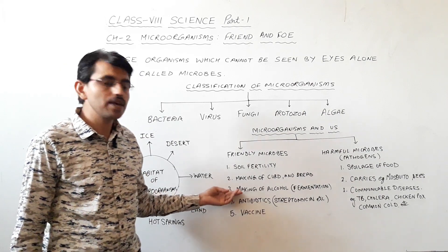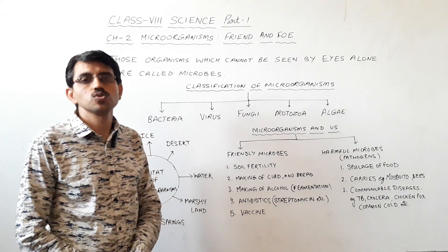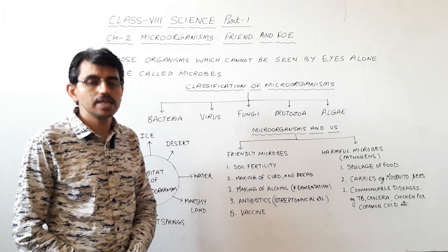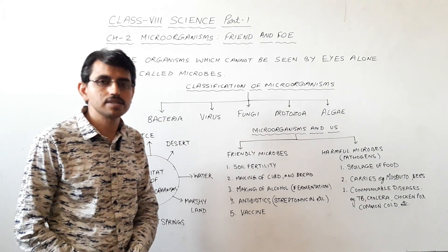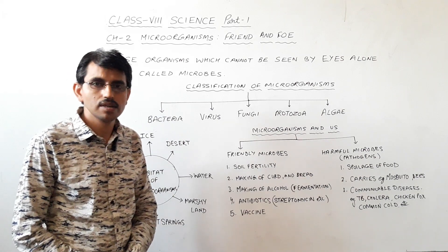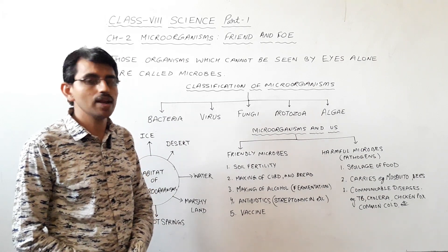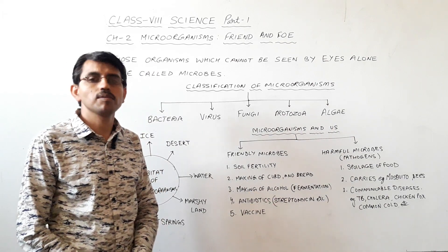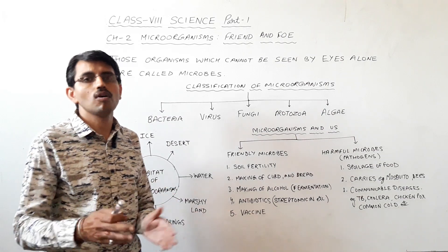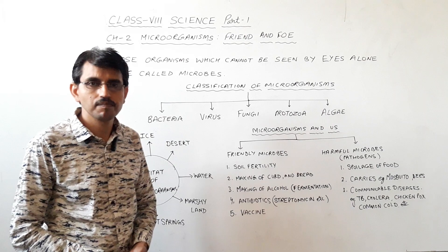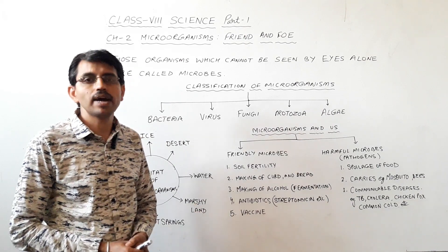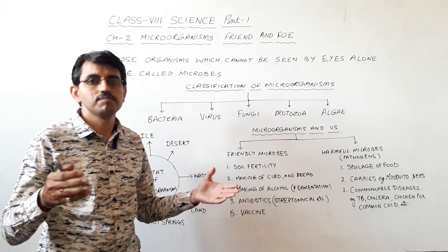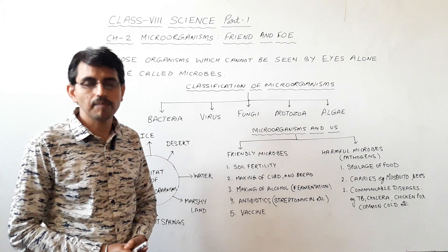The third friendly use is the making of alcohol. Alcoholic beverages like beer, whiskey, and rum, along with some medicinal products like cough syrups, tonics, and tincture of iodine, are all prepared from alcohol. Alcohol is prepared by the process of fermentation — the conversion of sugar into alcohol by the action of the micro-organism yeast. Yeast is also used in making many edible items at home, like bhaturas and bread.